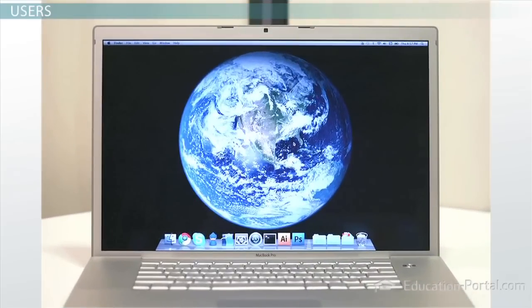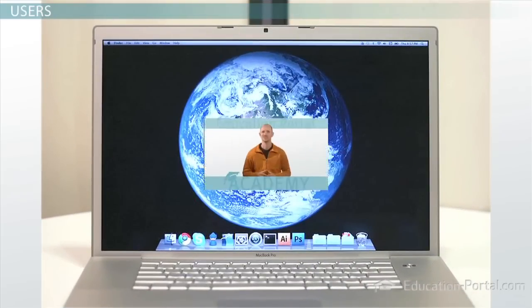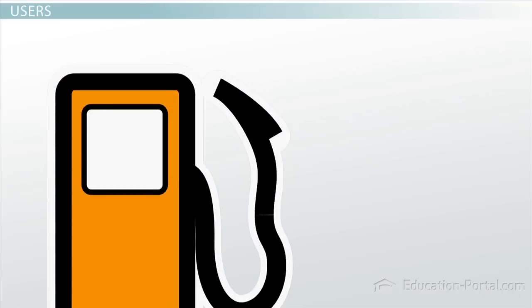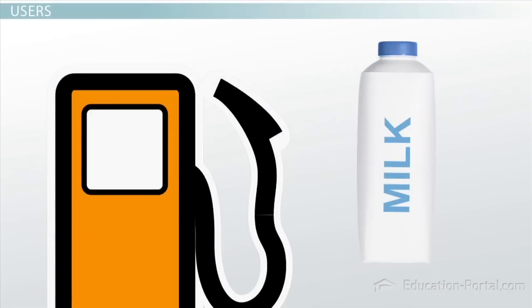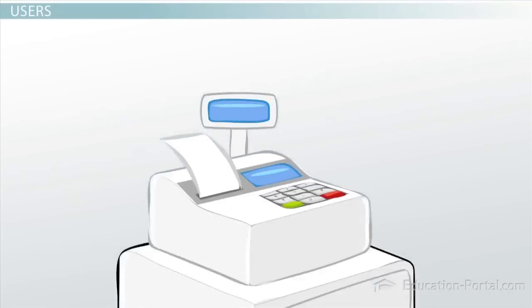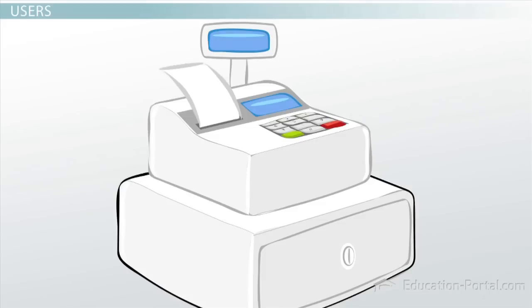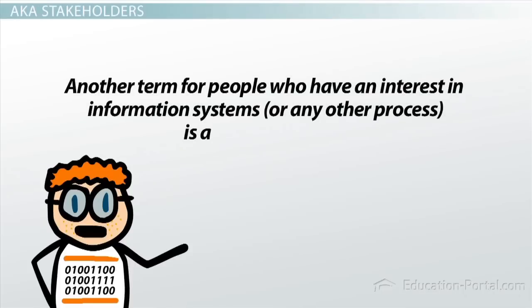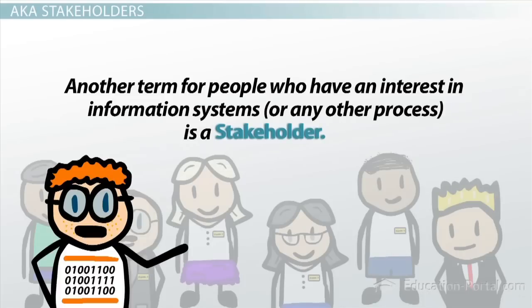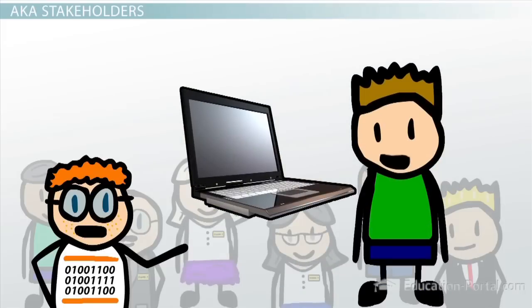You might access your school or employment record system, or take a trip to the gas station to fill up or buy a gallon of milk. We all use these systems day in and day out, making us users of information systems. Another term for people who have an interest in information systems is a stakeholder. These can include anyone who makes use of the system, also known as an end user, the creative team, customers, and anyone else who may be affected by the system.